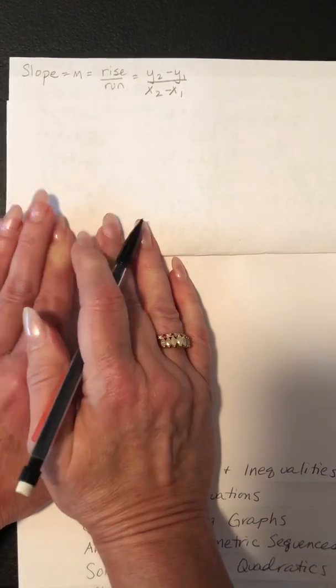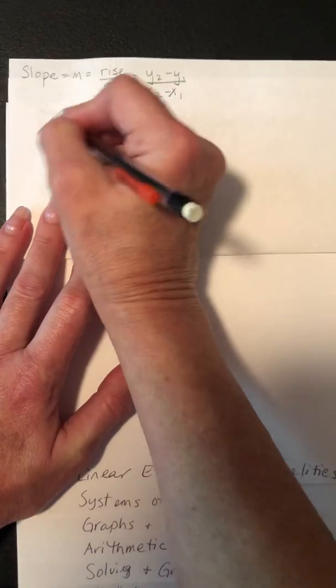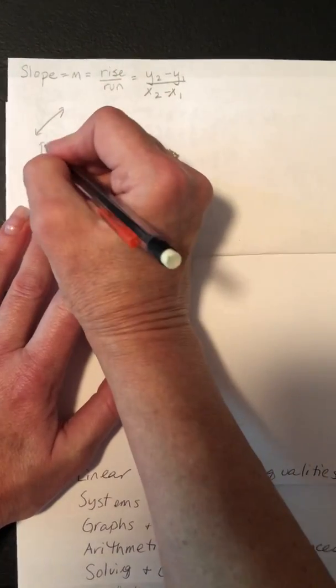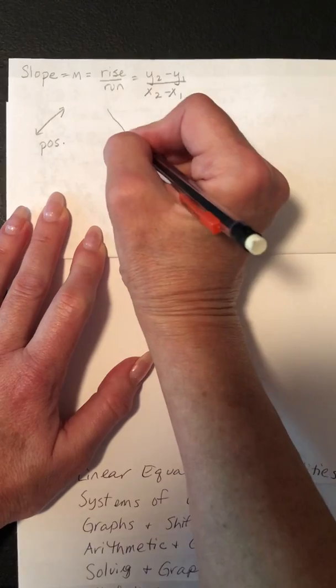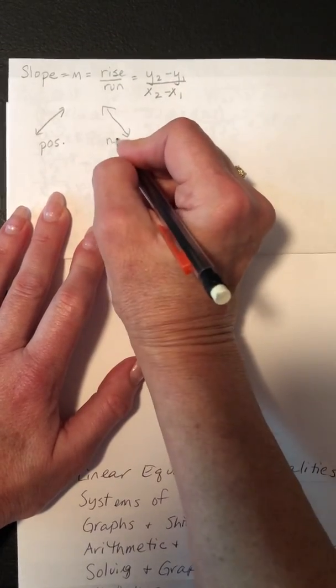Remember, there's four different kinds of slope. There's the slope that rises to the right, which is positive slope. There's the kind that falls to the right, which is negative slope.